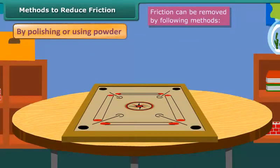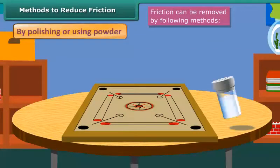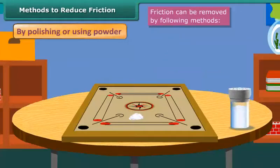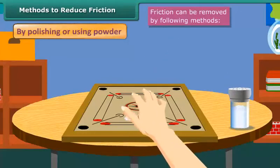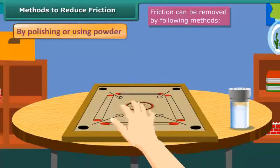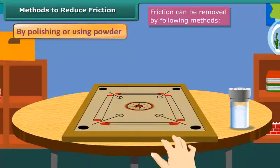Friction can be removed by following methods. By polishing or using powder, we can smooth the rough surface by polishing or by using powder. Due to smoothness, the friction is reduced from the surfaces.